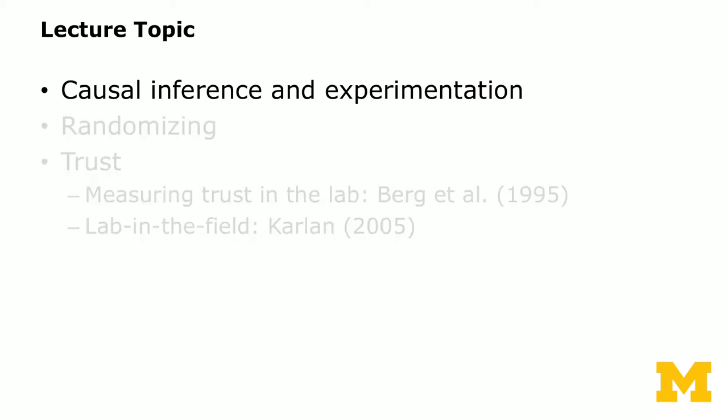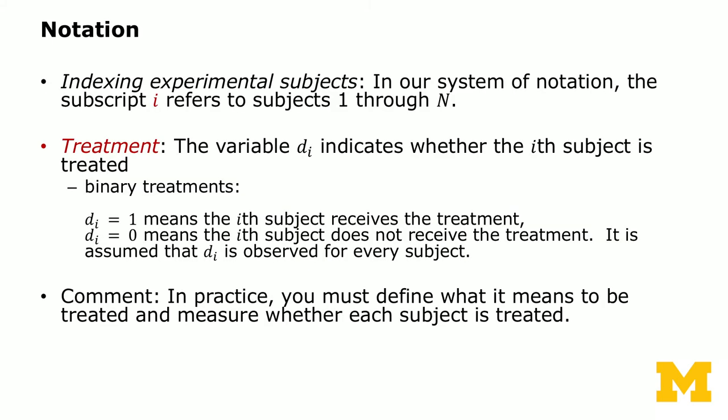We're going to start with causal inference and experimentation. This is a little dense, but we'll introduce some notation first that will be consistently used throughout the rest of the lectures. When you have experimental subjects, we index a subject with i, where subscript i refers to subjects 1 through n. The treatment variable is di — whether the i-th subject is treated. In a binary treatment situation, di equals 1 means the i-th subject receives the treatment, whereas di equals 0 means the subject does not receive treatment. It is assumed that di is observed for every subject.